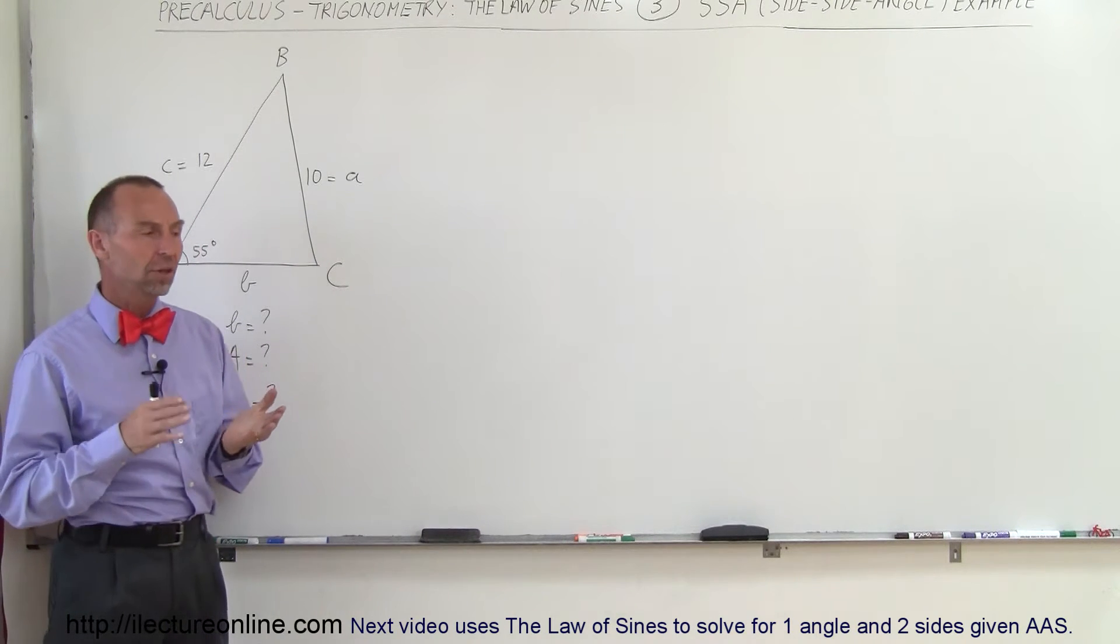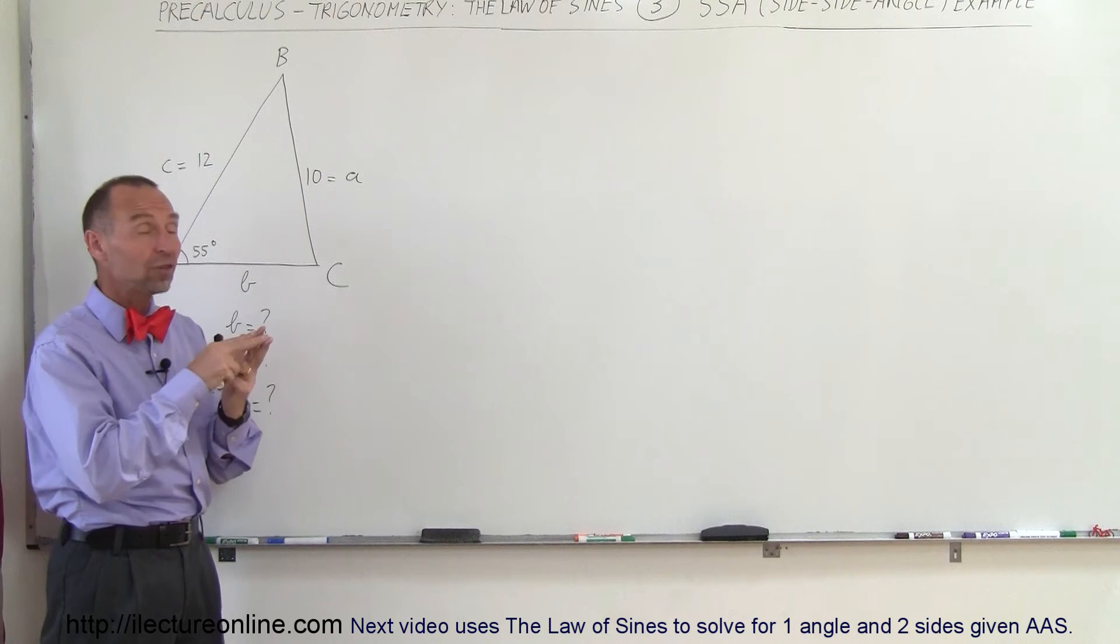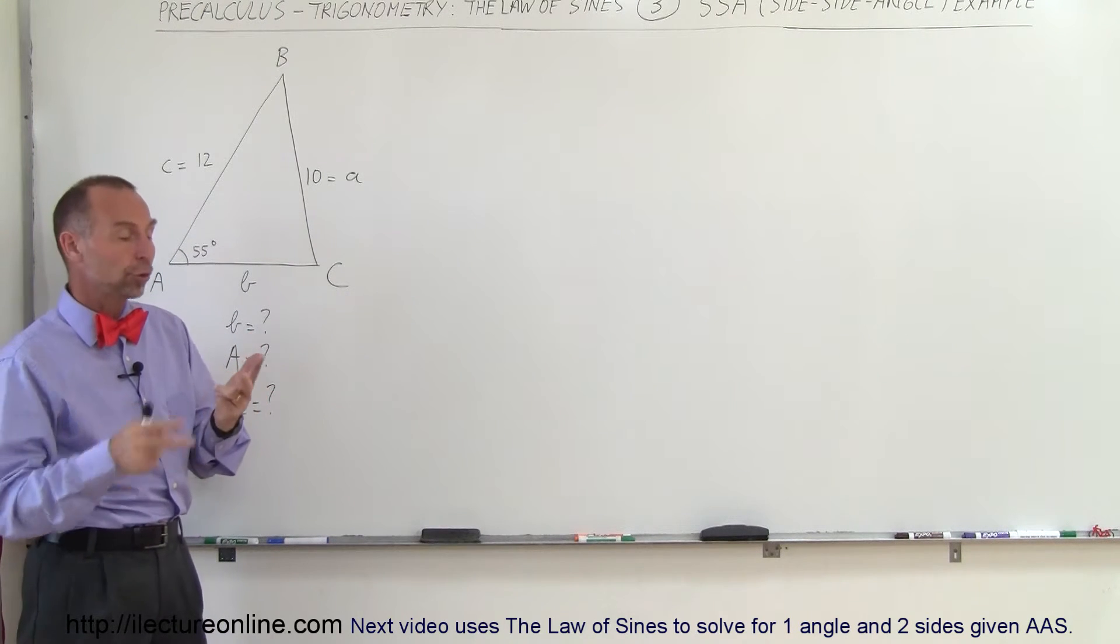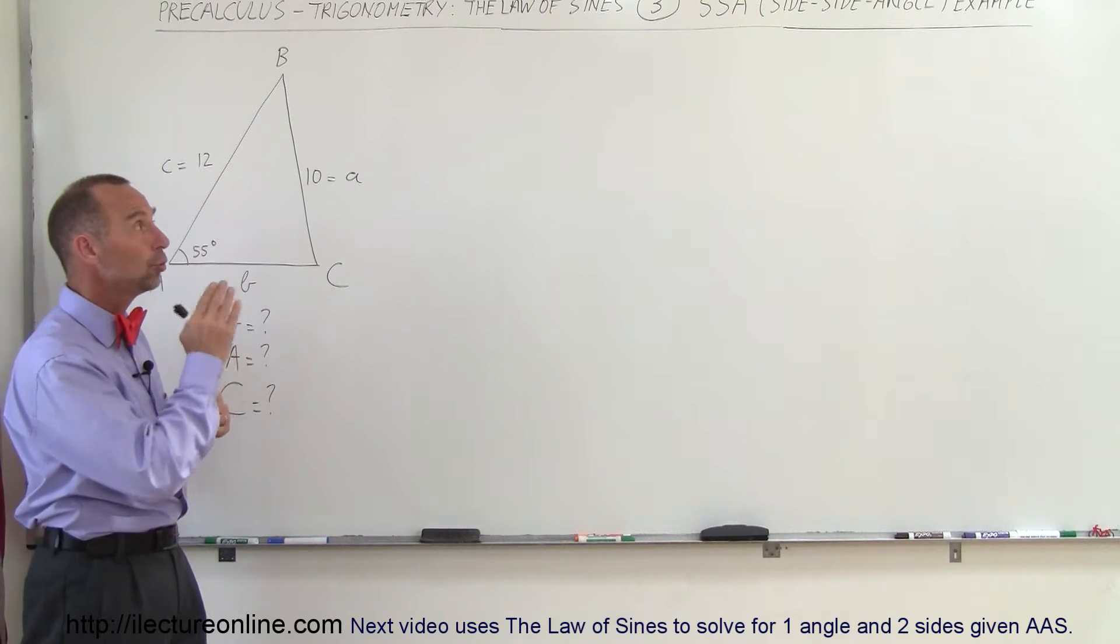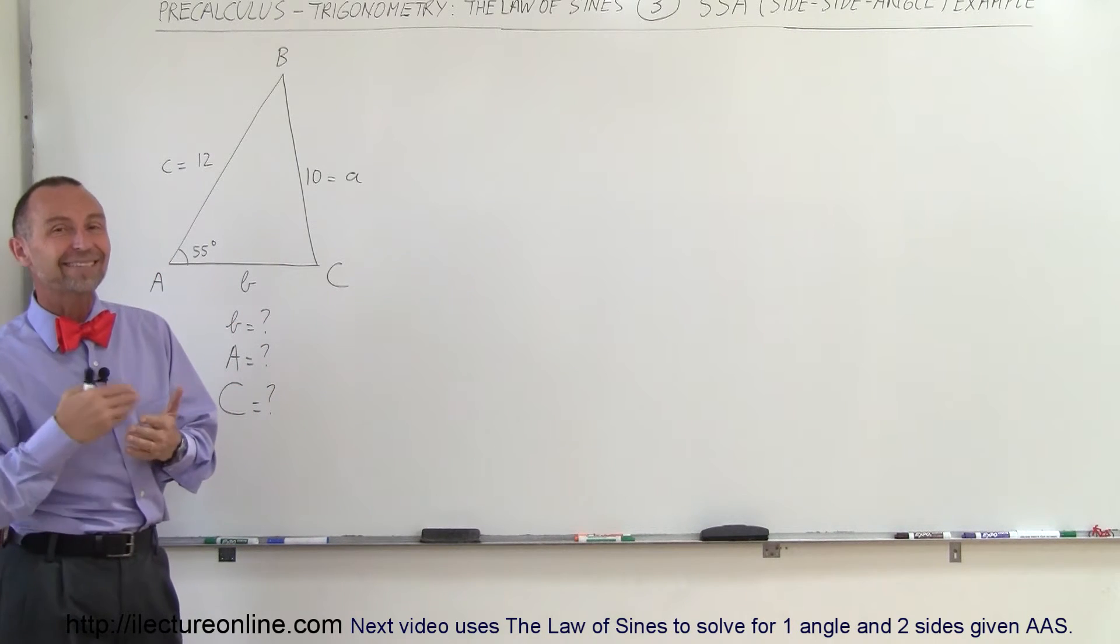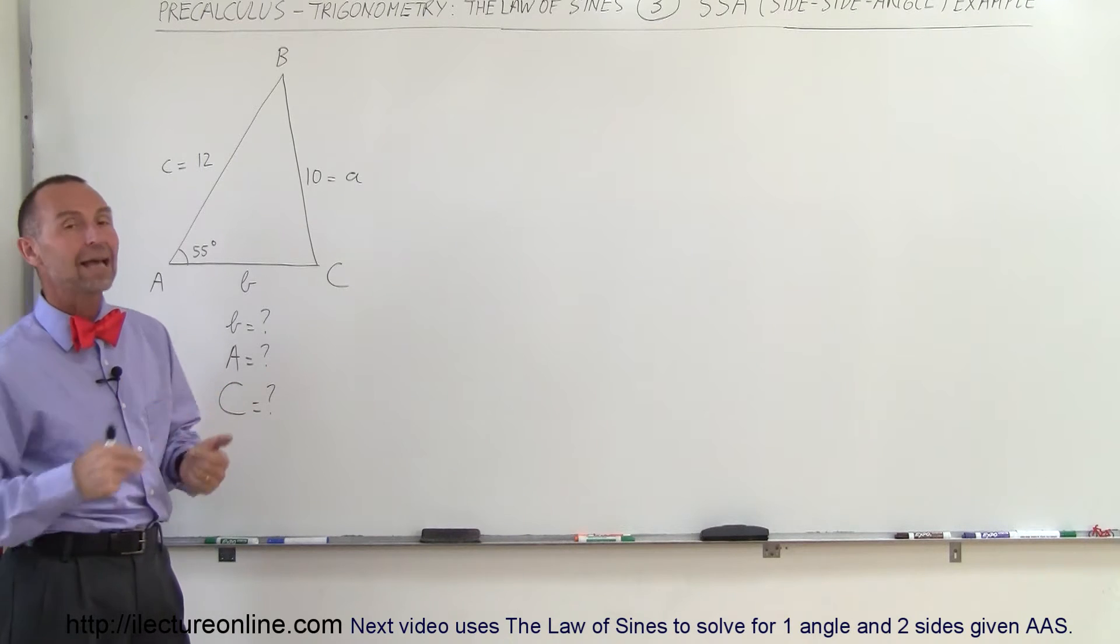There's usually two main cases: one case where you know two sides and an angle, the other case where you know two angles and a side. So this is going to be an example where you know two sides and an angle, so we call that the SSA case or the side-side-angle case.